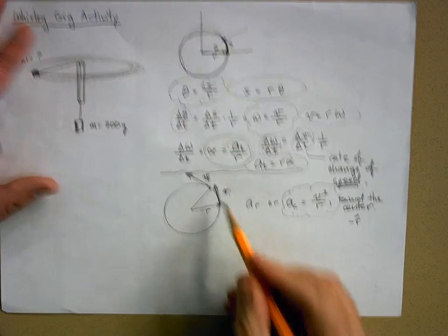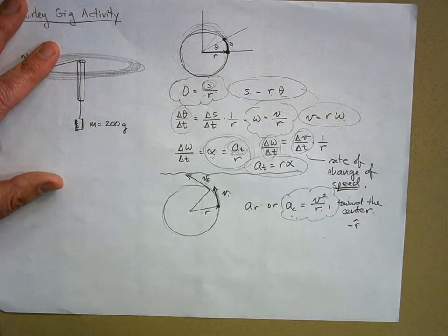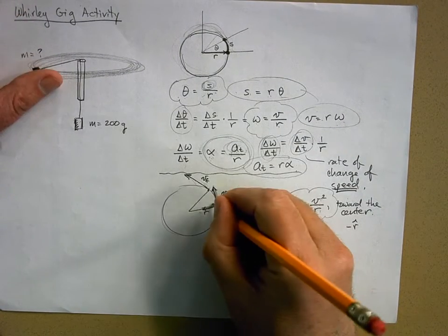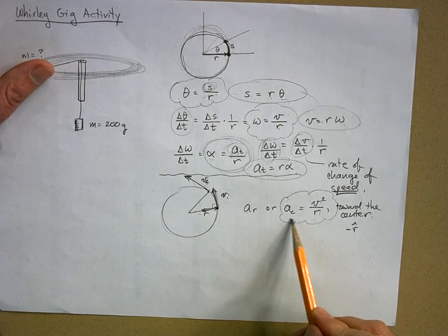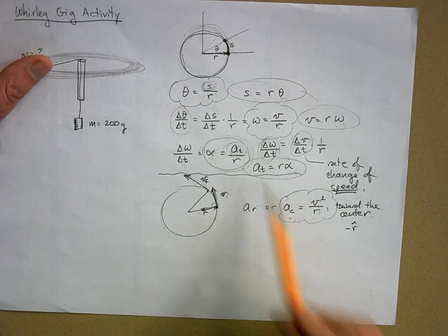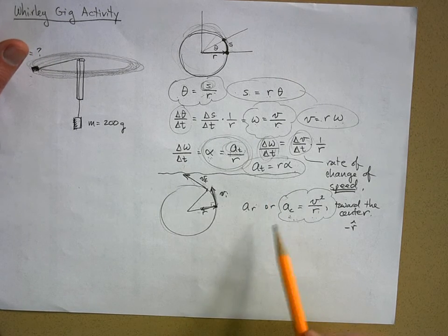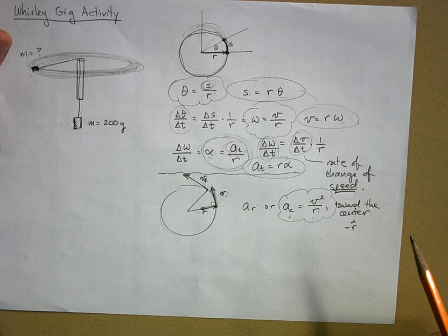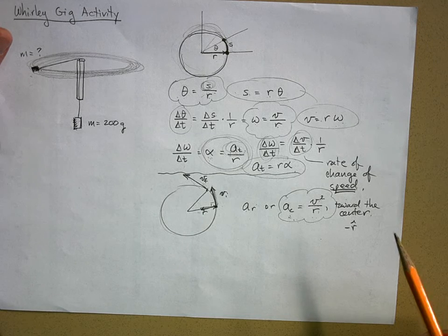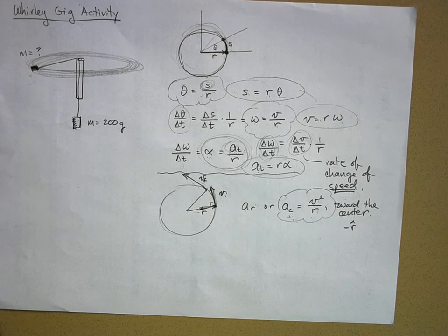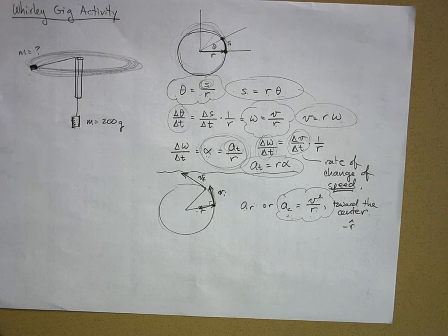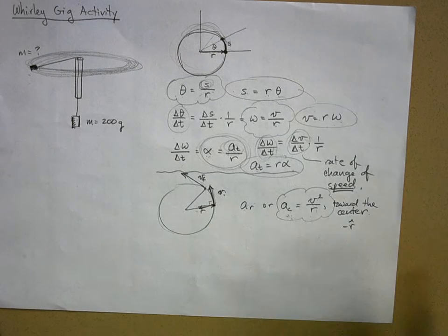Since tangent to the path and toward the center are always at 90 degrees, the tangential and centripetal accelerations are like the legs of a right triangle. The overall acceleration is the hypotenuse. You use the Pythagorean theorem and inverse tangent if you need the angle.